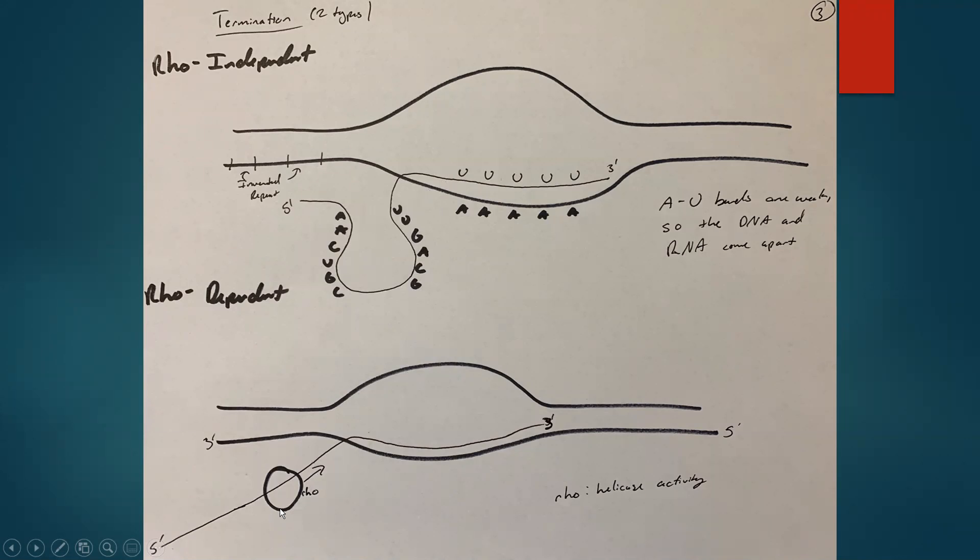Second, we have Rho dependent, where this molecule called Rho, which is responsible for helicase activity, comes up here, binds between the DNA and RNA, and simply causes them to disassociate from each other.